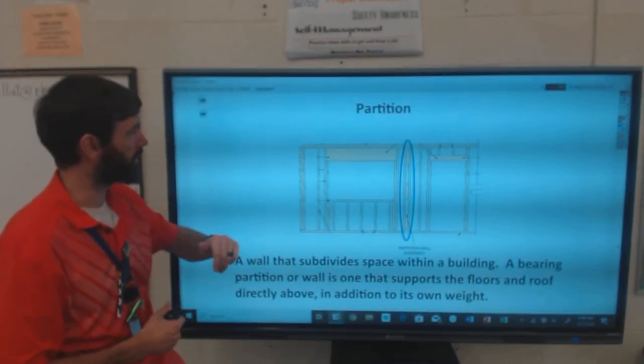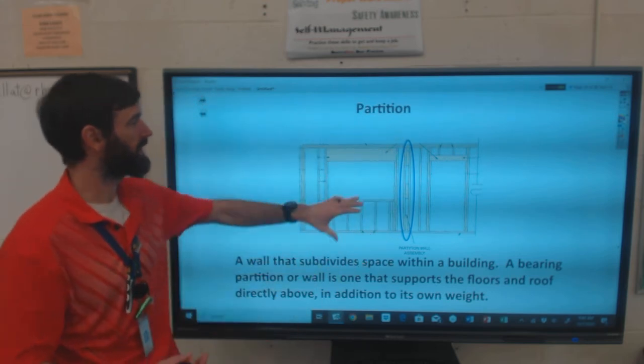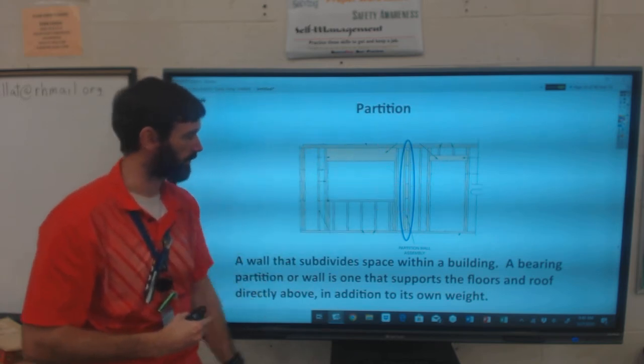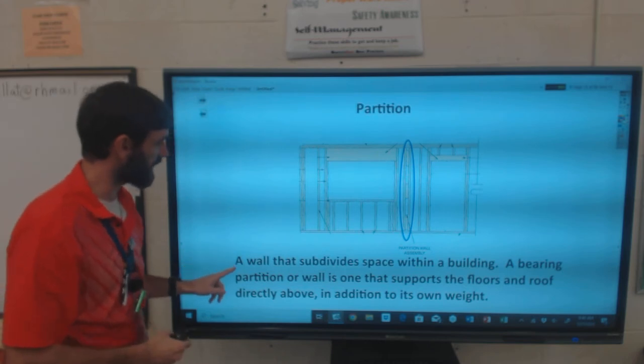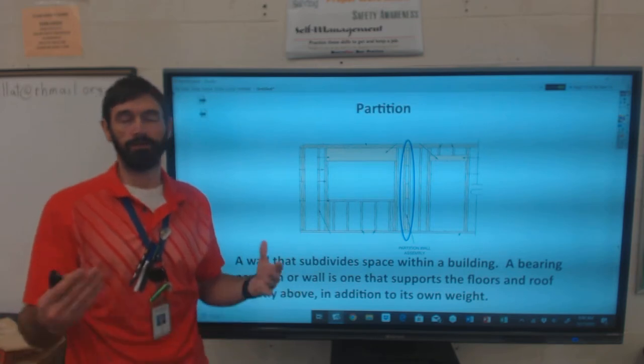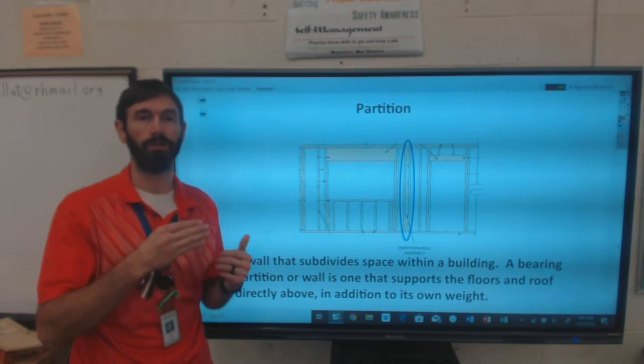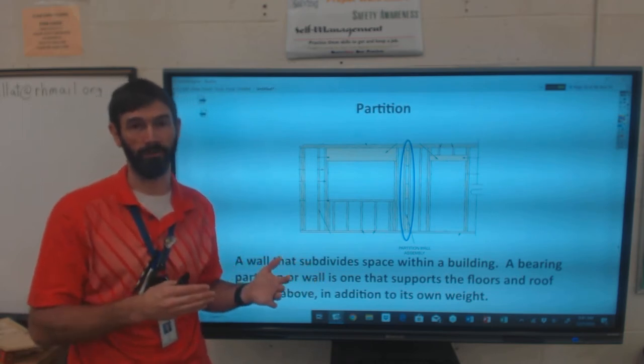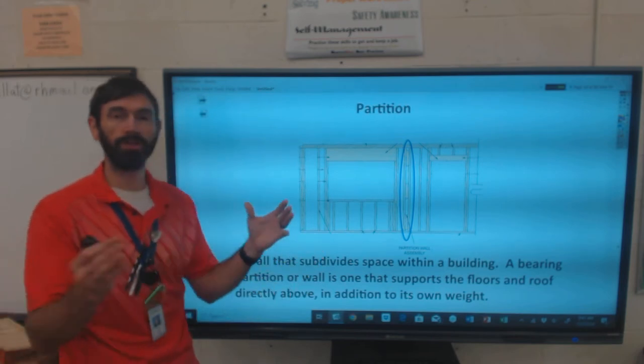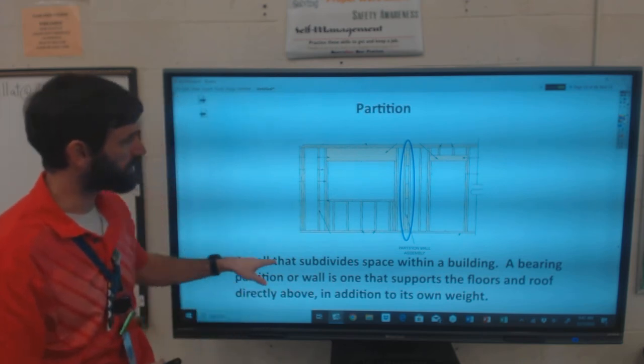Partitions - what I've got circled here is a partition assembly. This is where an interior wall will catch along this exterior wall. A partition is a wall that subdivides space within a building. Think the wall that separates your living room from a bedroom, the wall that separates your bathroom from the bedroom, or the closet from the bedroom. Walls that are inside of a building that make that big space into smaller sections.